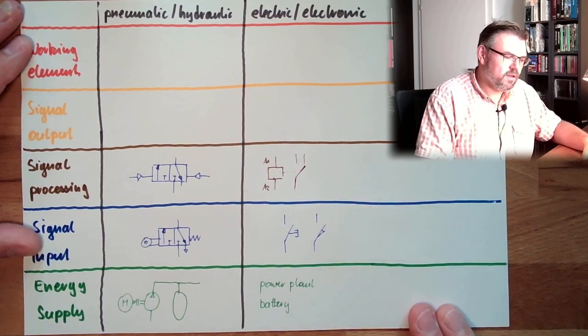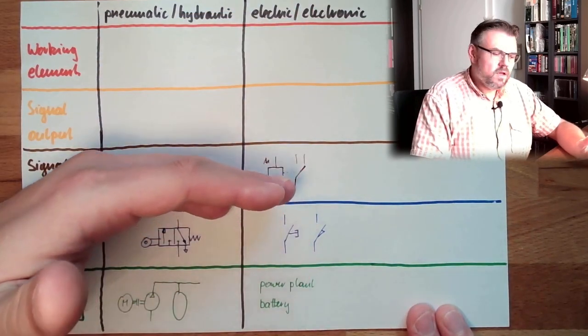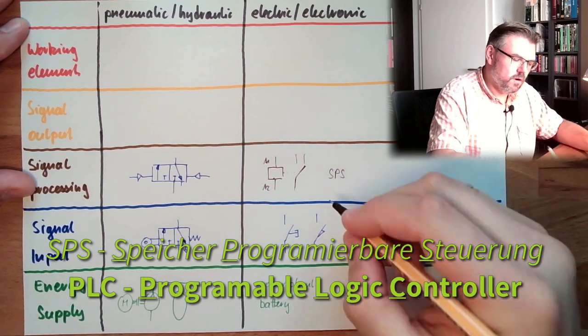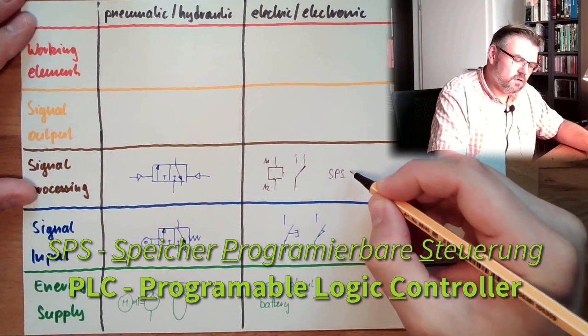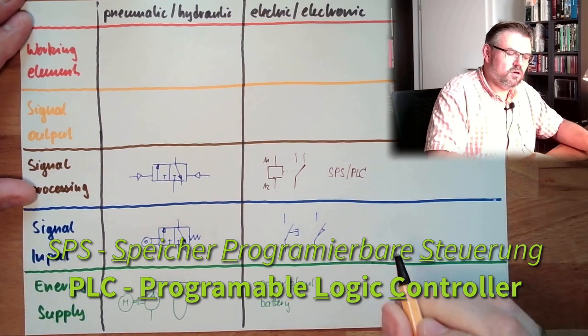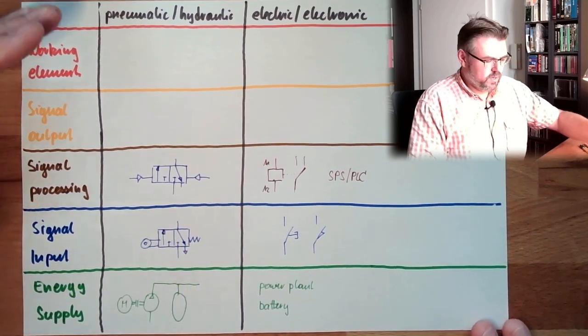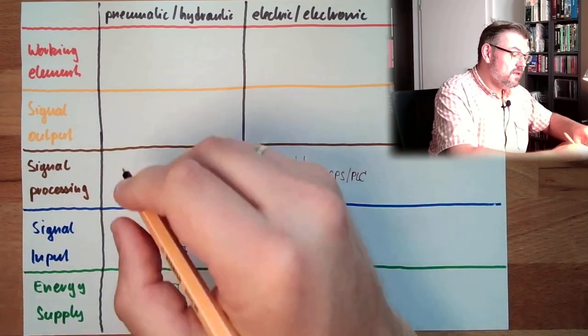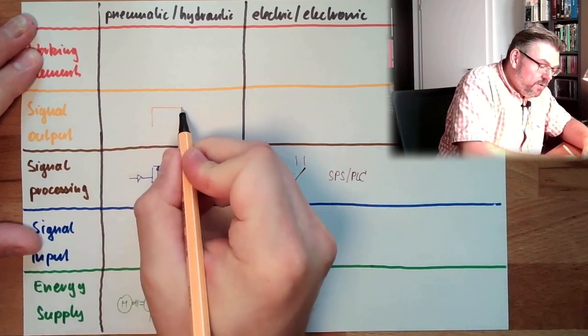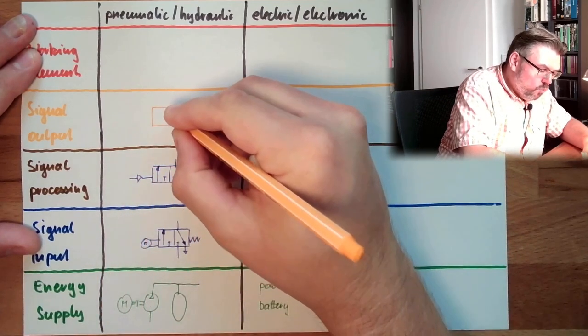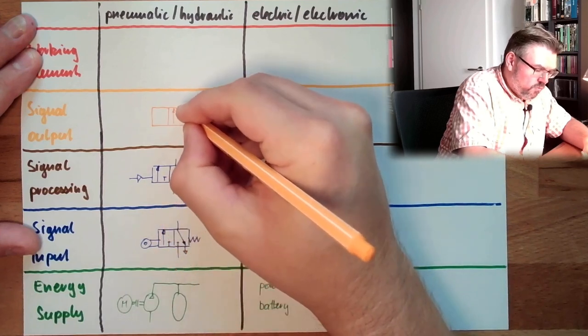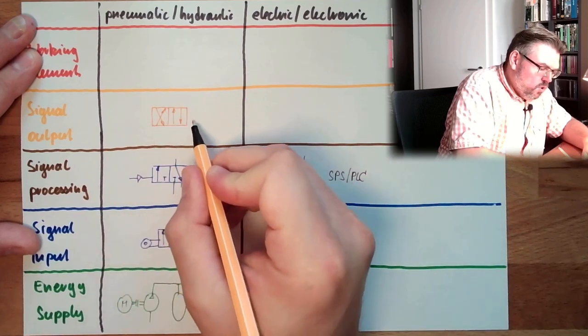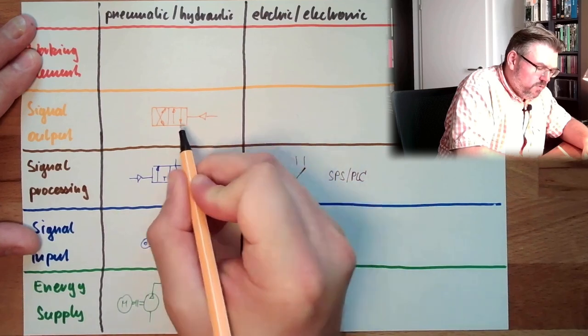Or in electronic, it might not be a relay, it might be SPS. SPS is German, Speicherprogrammierbare Steuerung. PLC is the correct term in English, programmable logic controller. Signal output. Here in pneumatic, this is also usually a wave valve, but a big one. A big wave valve which can, and now I'm drawing a four-two wave valve, which can be usually also operated by some pressure.